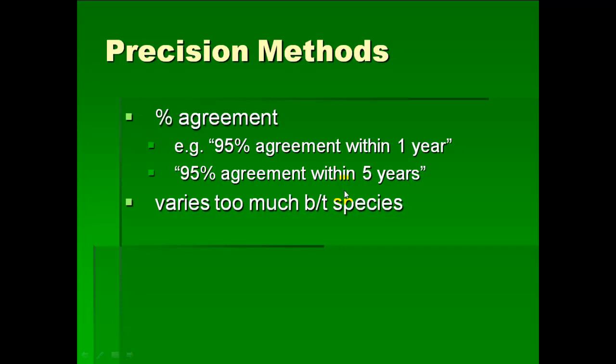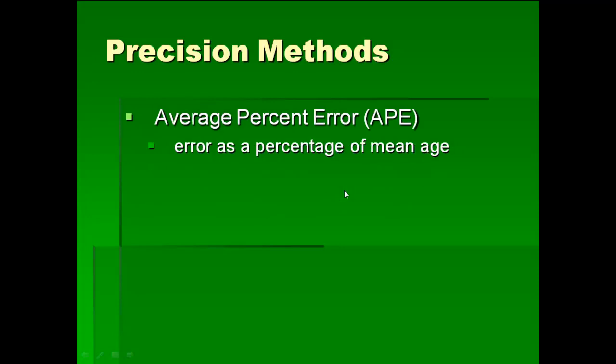This is not a very good measure of precision because it varies too much between different species. A better way of measuring and reporting precision is something called the average percent error, or the APE. Basically, it's just the error as a percentage of the mean age.